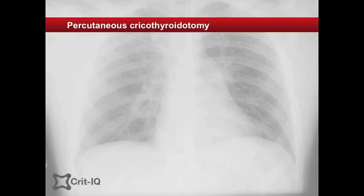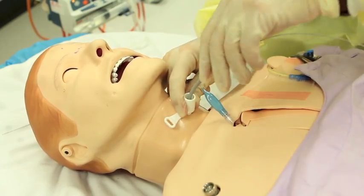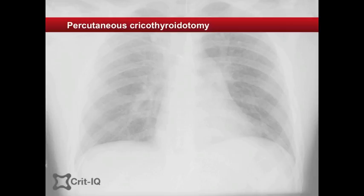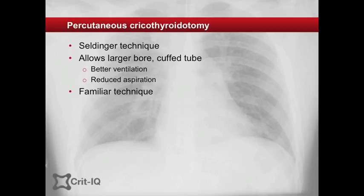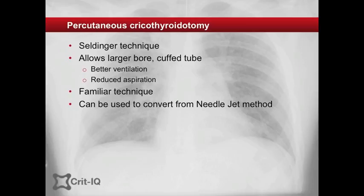A more reliable method may be to place a small calibre tube into the cricothyroid membrane. This can be performed either percutaneously using a modified Seldinger technique or surgically. Percutaneous insertion of the cricothyroidotomy tube utilises the Seldinger technique made famous by its use in vascular access catheter insertion. The technique has the advantage of providing a bigger cuffed tube that can be used for manual ventilation and for preventing aspiration. It also utilises a familiar skill set in the ICU and can be used to convert from a needle jet method to a definitive airway.